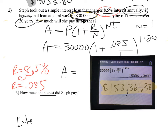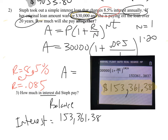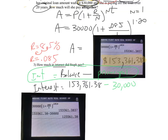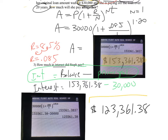But how much in interest — how much extra did Steph pay back? The balance, which is how much she's paying back, is $153,361.38. We subtract the principal — how much money she borrowed in the first place, which was $30,000. The way you calculate the interest is balance minus the principal. So when we do this subtraction, Steph is going to be paying back $123,361.38 in interest — that's how much extra she's going to be paying back.